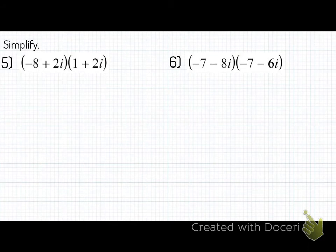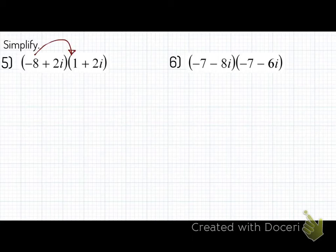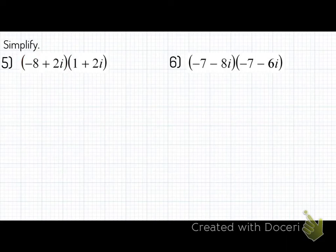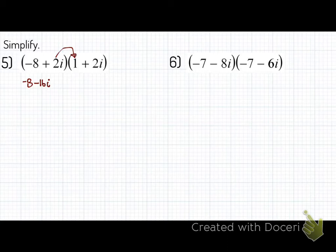Number 5. Let's start this one off together. Take a moment to write the problem down — I'll give you about 10 seconds. Here we go. This is like number 2 — we're going to multiply across, distributing each of these terms. We call it foiling, but I don't want you to call it foiling because we're going to do harder problems. Take the first term and multiply with the first term in the second binomial. We have negative 8. Negative 8 times 2i is negative 16i. Then 2i times 1 is positive 2i. And then positive 2i times positive 2i is positive 4i squared.